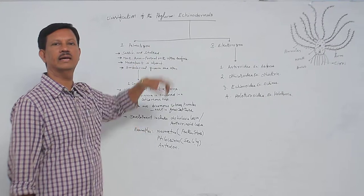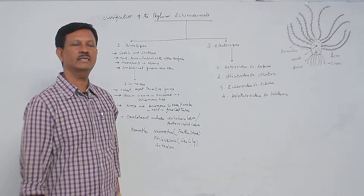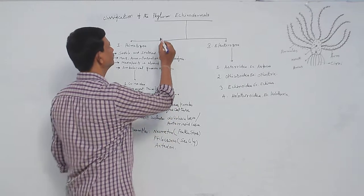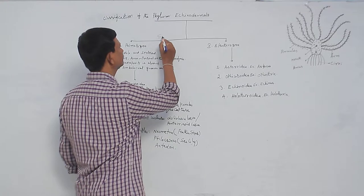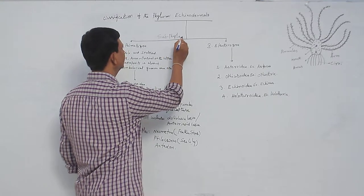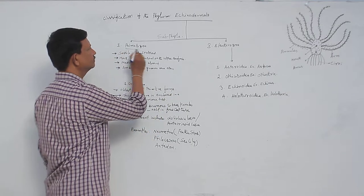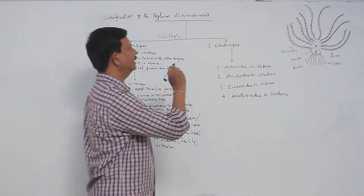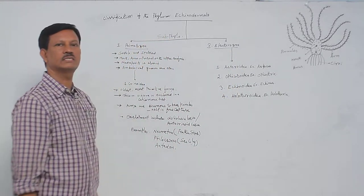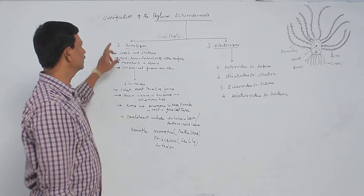Classification of the phylum Echinodermata. Echinodermata is divided into two subphyla: Pelmatozoa and Eleutherozoa. These are the two subphyla found in the phylum Echinodermata.